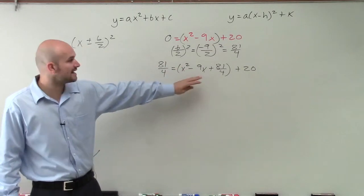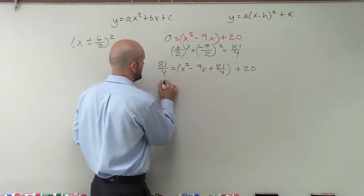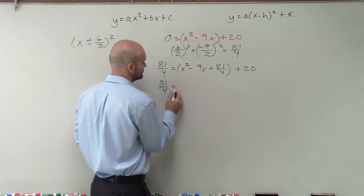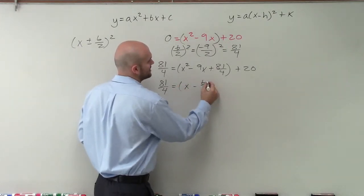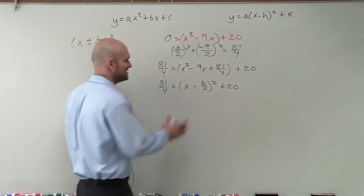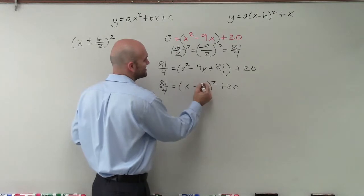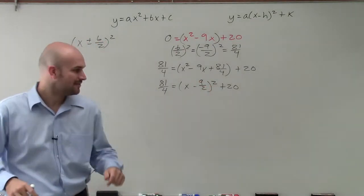Well, in this case, our middle term is negative. Our b divided by 2 is negative 9 over 2. So you can see it's negative. So therefore, I have 81 over 4 equals x minus b divided by 2 squared plus 20. Not b divided by 2. How about we write 9 over 2? OK. So now we're good on this.